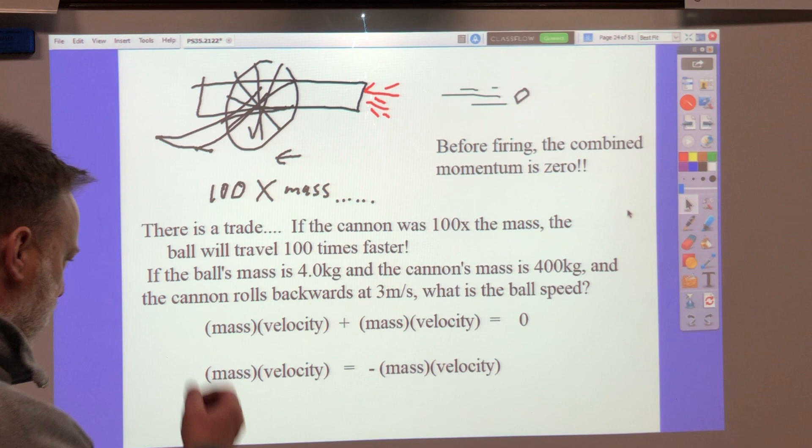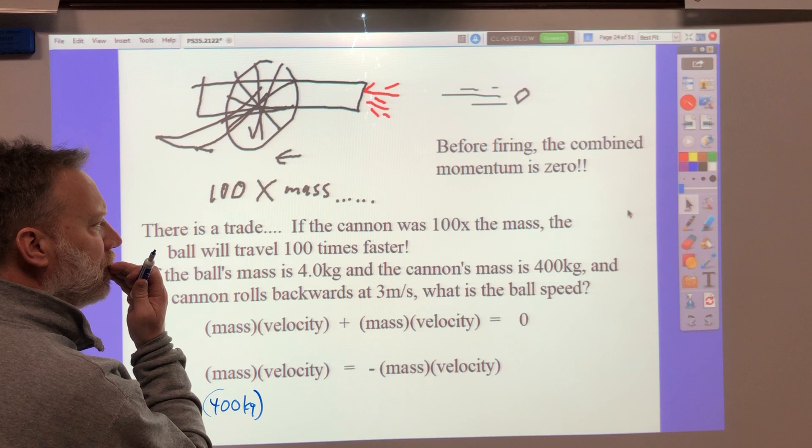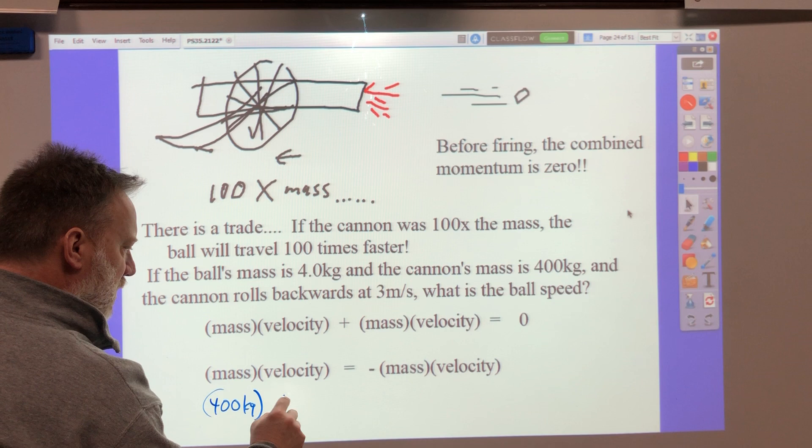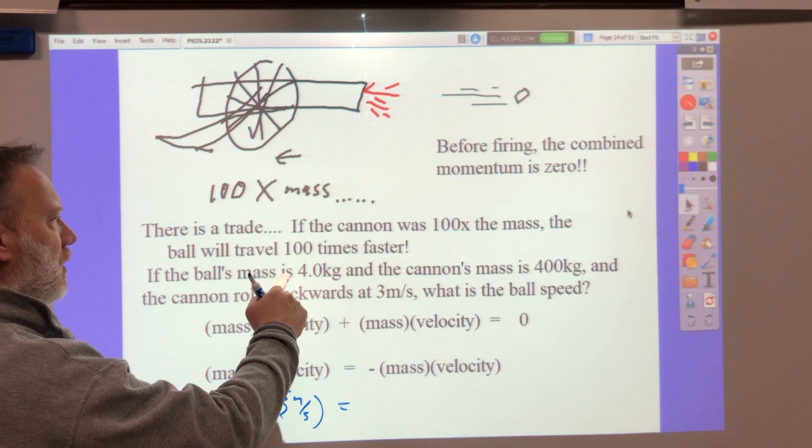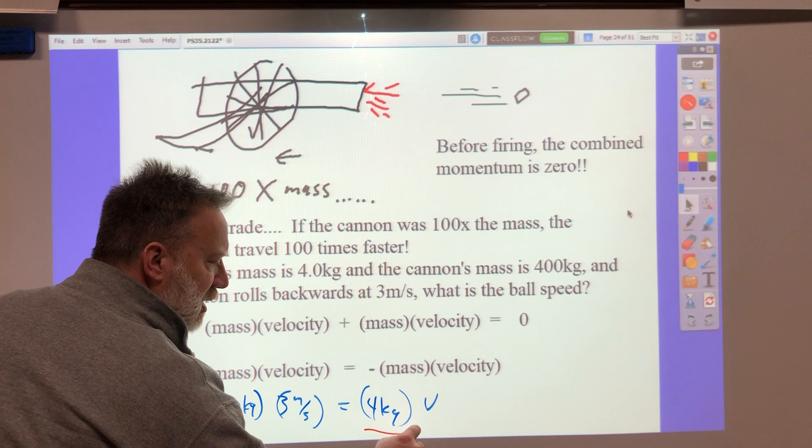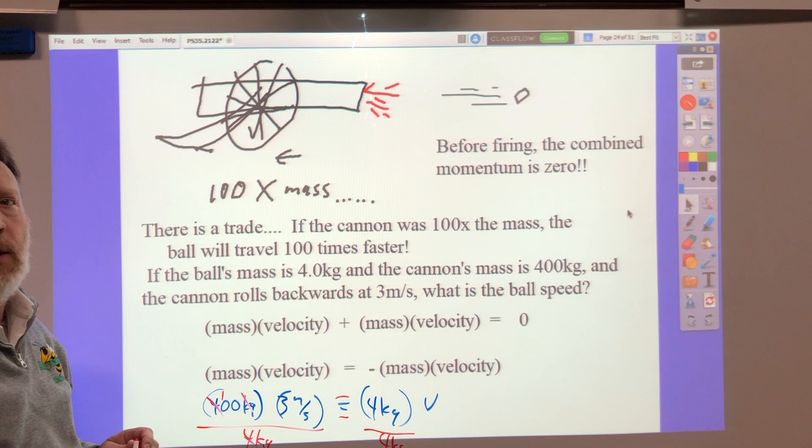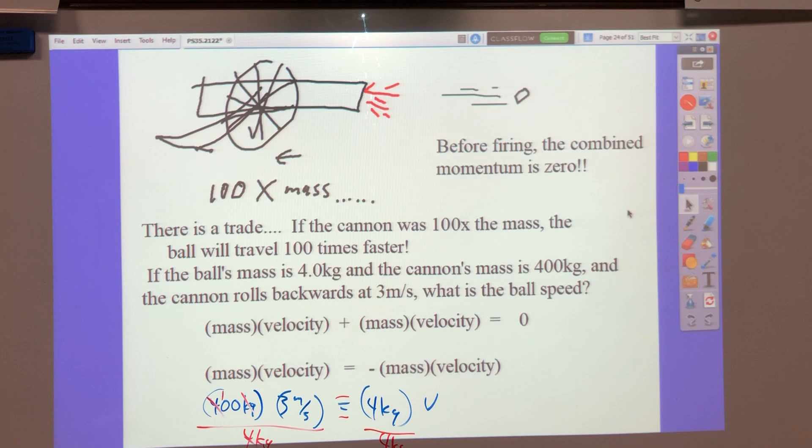I don't have that worked out, so let's do it right here. I would have, let's see, the cannon was 400 kilograms, and the velocity of the cannon was three meters per second, and that has to equal the cannon ball, four kilograms times V. Well, by now, you know how to do this. We've done this over and over. Get this by itself. Divide this side by four kilograms. But to be equal, we have to divide this side by four kilograms. We're going to cancel the kilograms and the four. So 100 times three, 300. 300 meters per second.